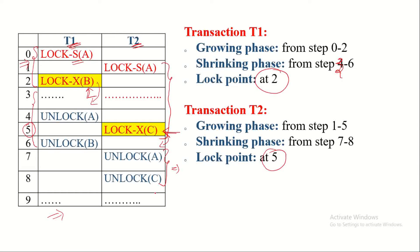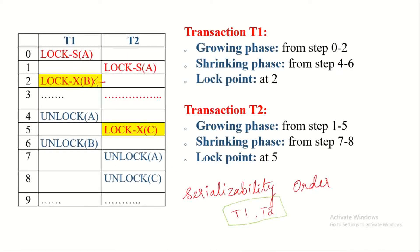Now let us discuss the serializability order. Transaction T1 acquired its final lock at step two, and T2 acquired its final lock at step five. Since T1 got its lock point first, the serializability order is T1 followed by T2. If the transactions are executed in this serial order, the concurrent execution of T1 and T2 will produce an equivalent and consistent result.